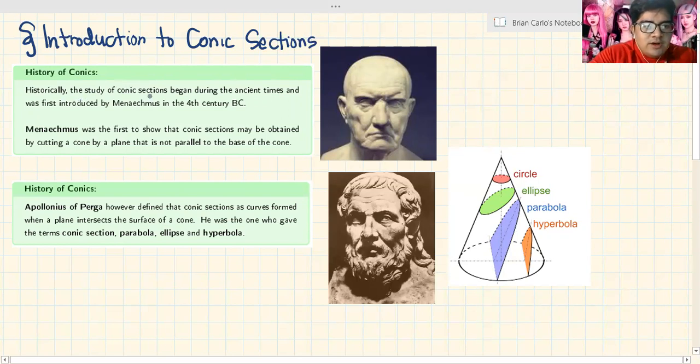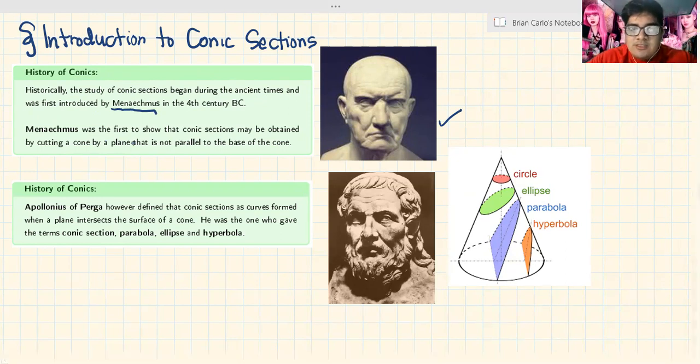Historically, the study of conic sections began during the ancient times and was first introduced by Menaechmus in the 4th century BC. This is Menaechmus. Menaechmus was the first to show that conic sections may be obtained by cutting a cone by a plane that is not parallel to the base of the cone.